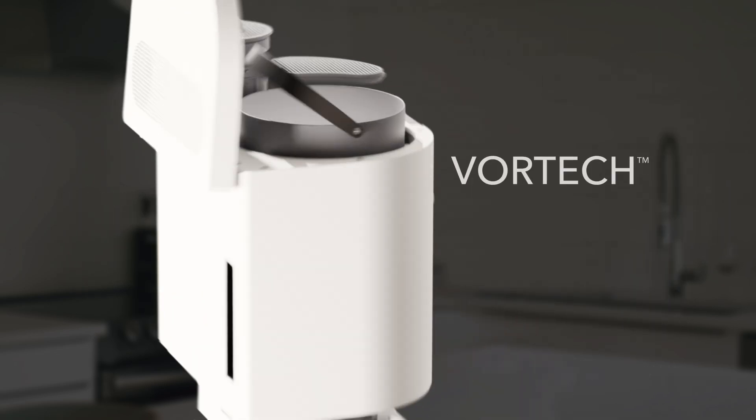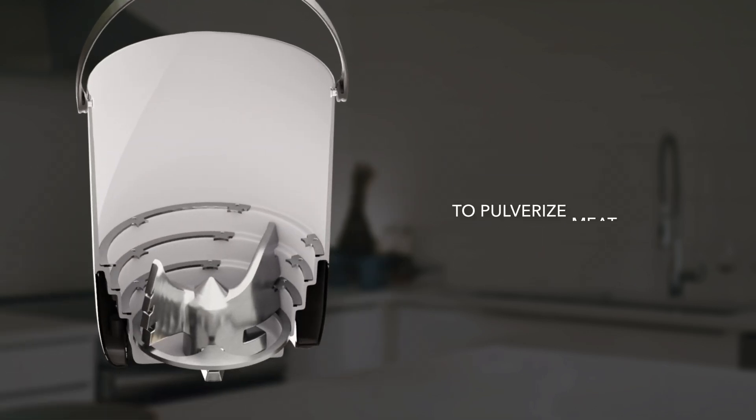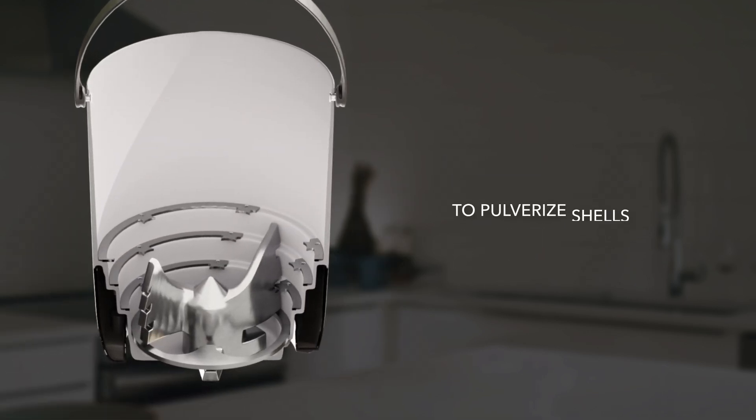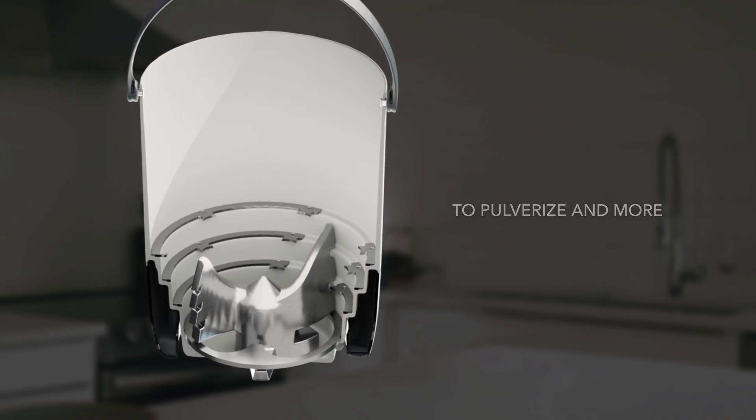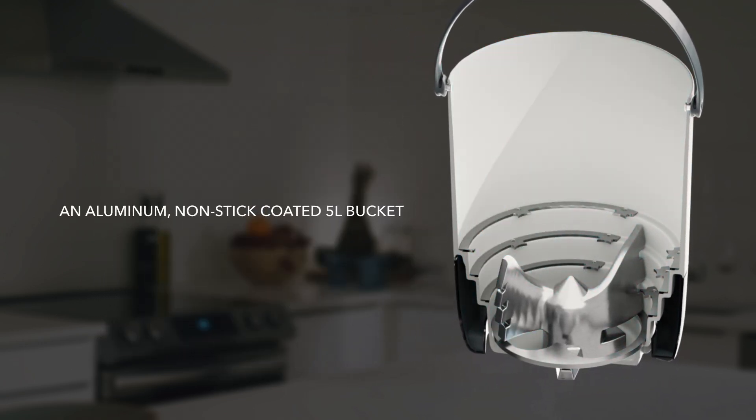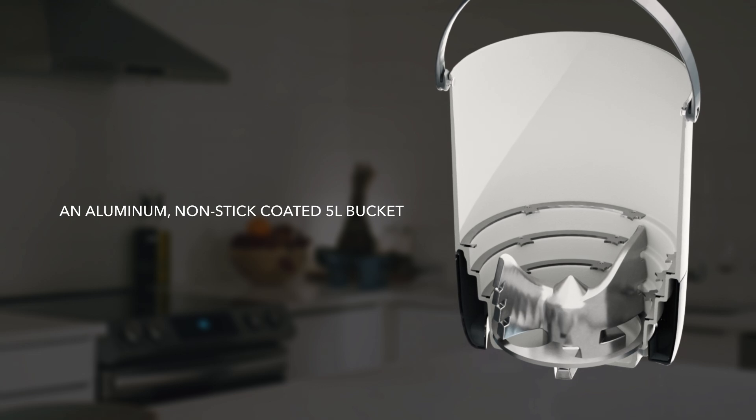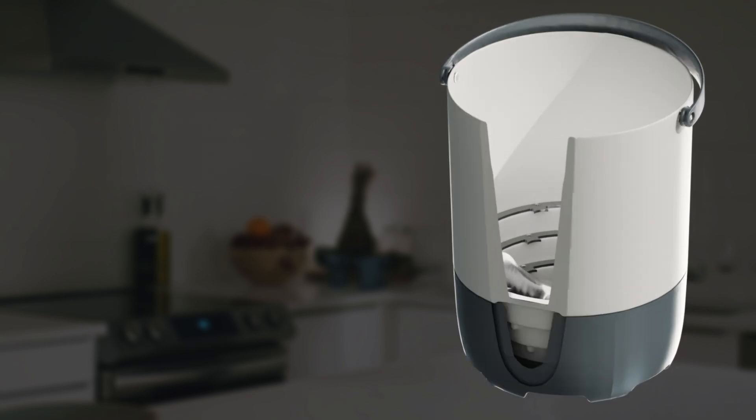The Vortec grinding system uses revolutionary technology to pulverize meat, bones, pits, shells and more. The blades are integrated into an aluminum non-stick coated 5-liter bucket that is the largest and most energy efficient on the market.